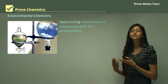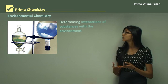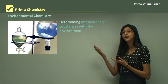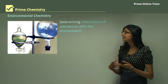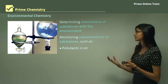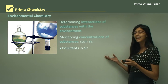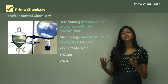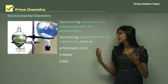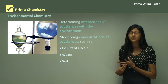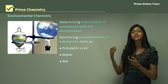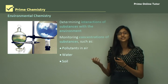Environmental chemistry determines the interactions of substances in the environment. For example, there are very different chemicals in the atmosphere compared to on land, and an environmental chemist looks at how these interact. They also monitor the concentration of pollutants in air, water, and soil. For instance, do we have too much carbon dioxide in the environment — is that increasing the temperature of the earth and making it difficult for us to live?